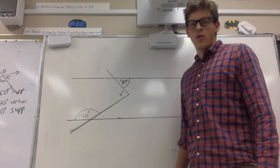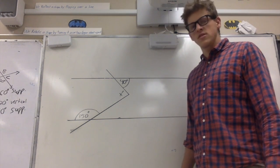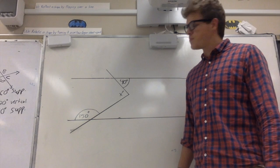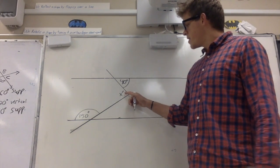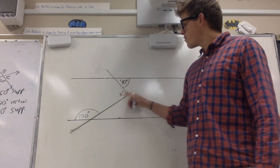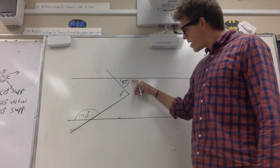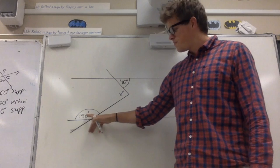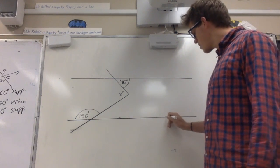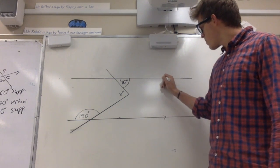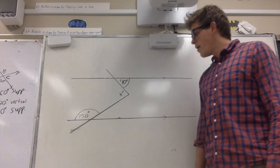Hello, today I wanted to go over one of the auxiliary line problems that we talked about. We're going to be solving for x degrees. Right now we have 40 degrees, 150 degrees, and we're assuming that these two lines are parallel.